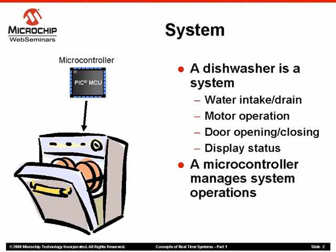What is a system? A system is something that solves a problem. For example, to solve the problem of dirty dishes, we can design a system of a dishwasher. An intelligent unit, such as a microcontroller, can manage various functions in a system in some coherent way. For example, a microchip PIC microcontroller embedded in a dishwasher can manage various functions to fulfill coherent operation of the dishwasher.